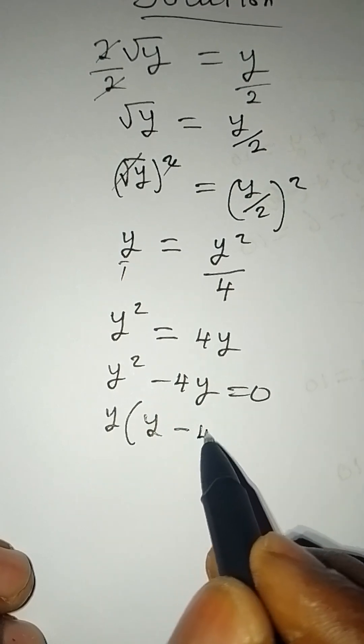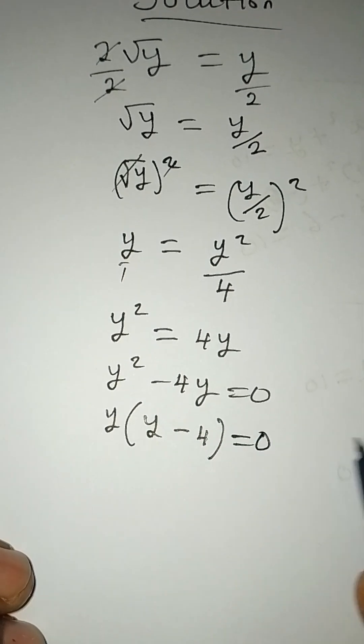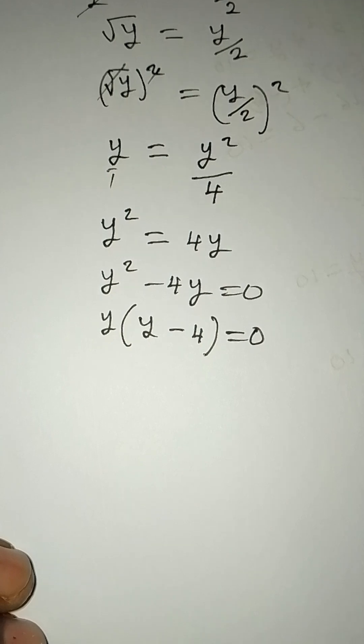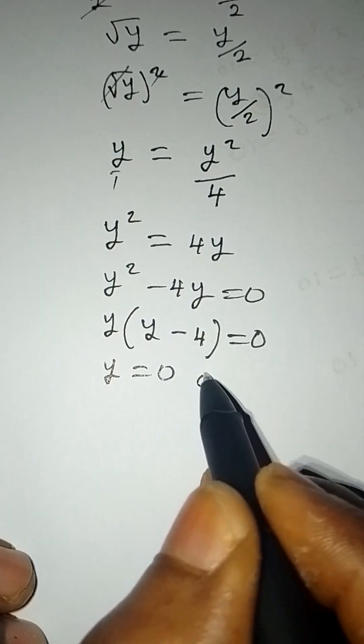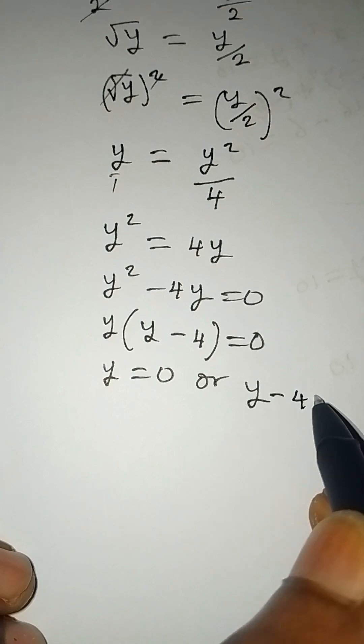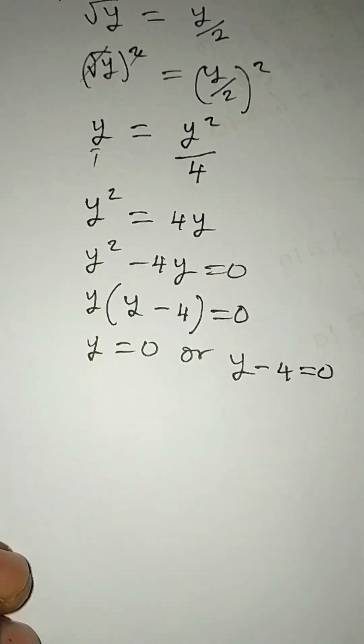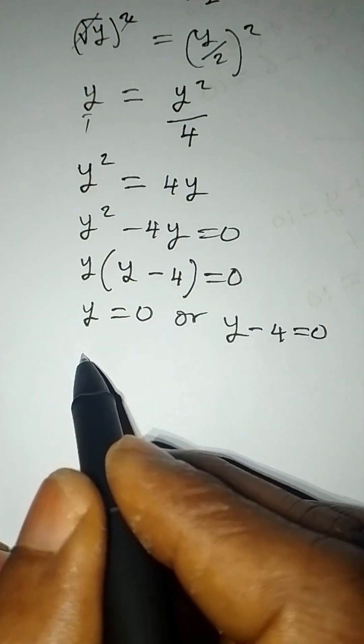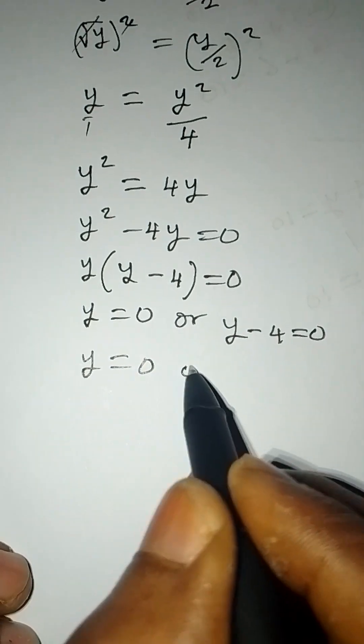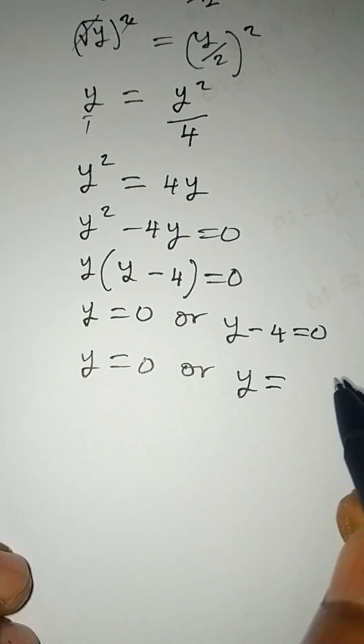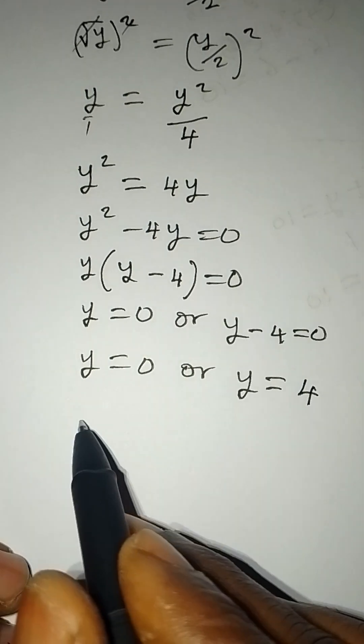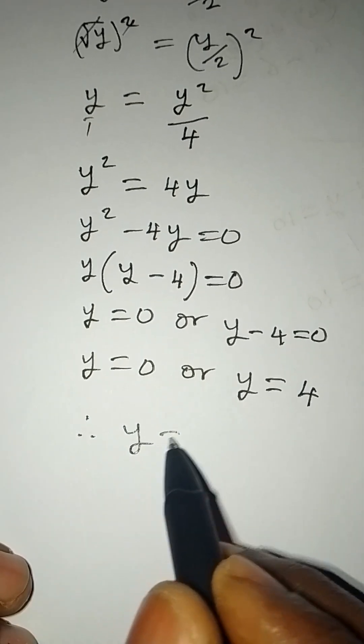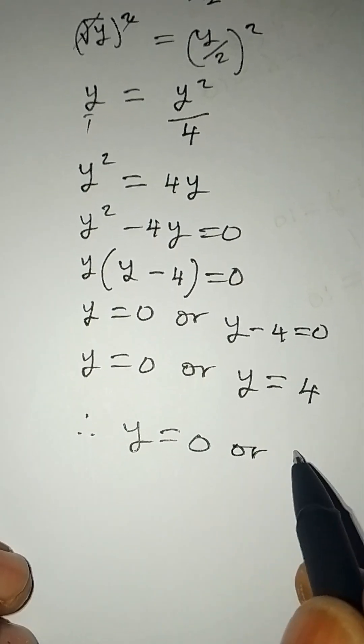So we can conclude that either y = 0 or y - 4 = 0. If y - 4 = 0, then y = 4. Therefore, y = 0 or y = 4.